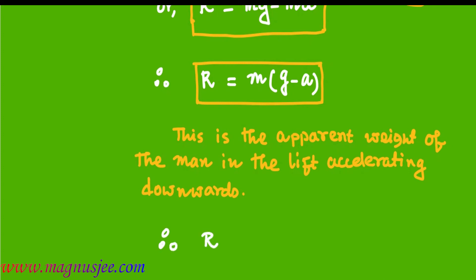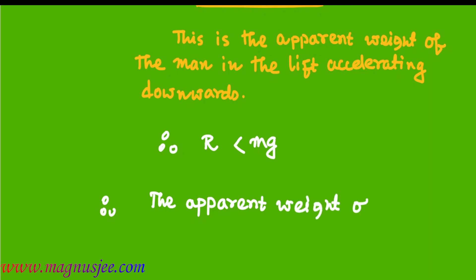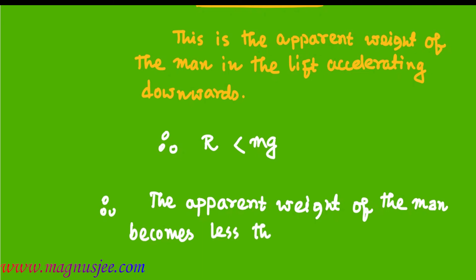Therefore, R is less than Mg. That is, the apparent weight is less than the actual weight of the man in the lift. The apparent weight of the man becomes less than the actual weight or true weight when the lift moves downwards with an acceleration A.